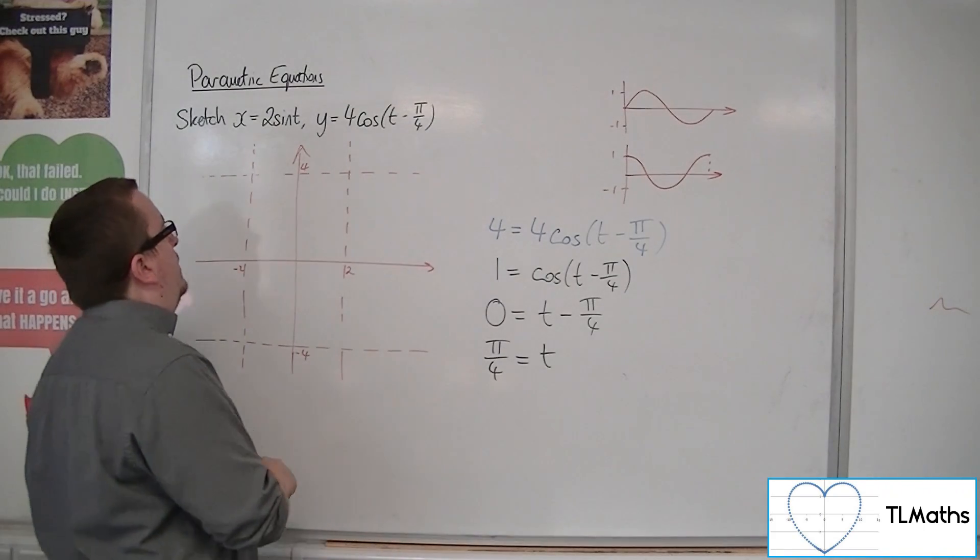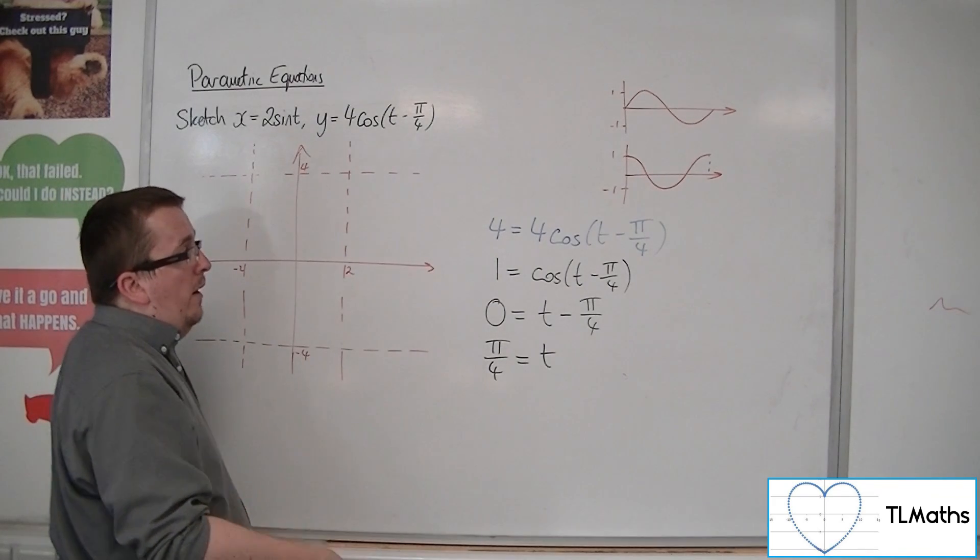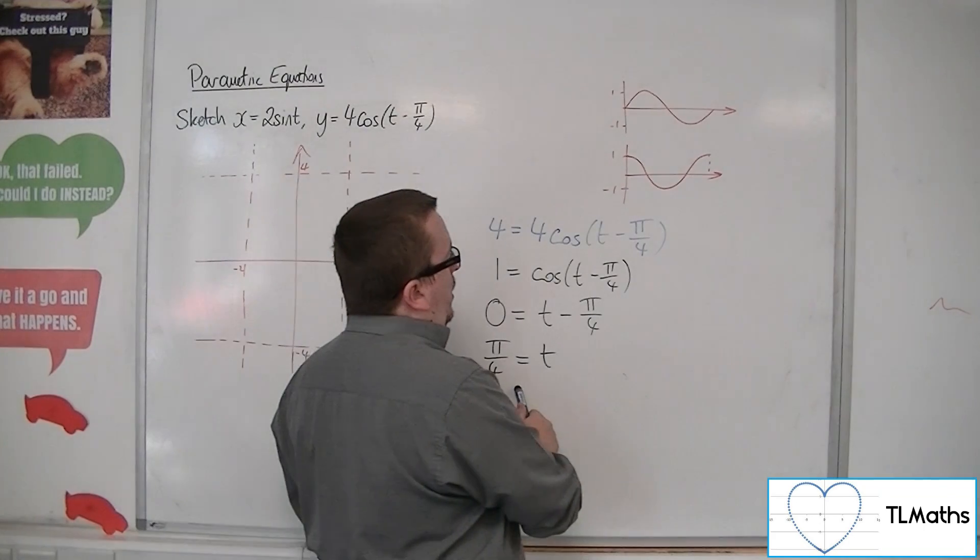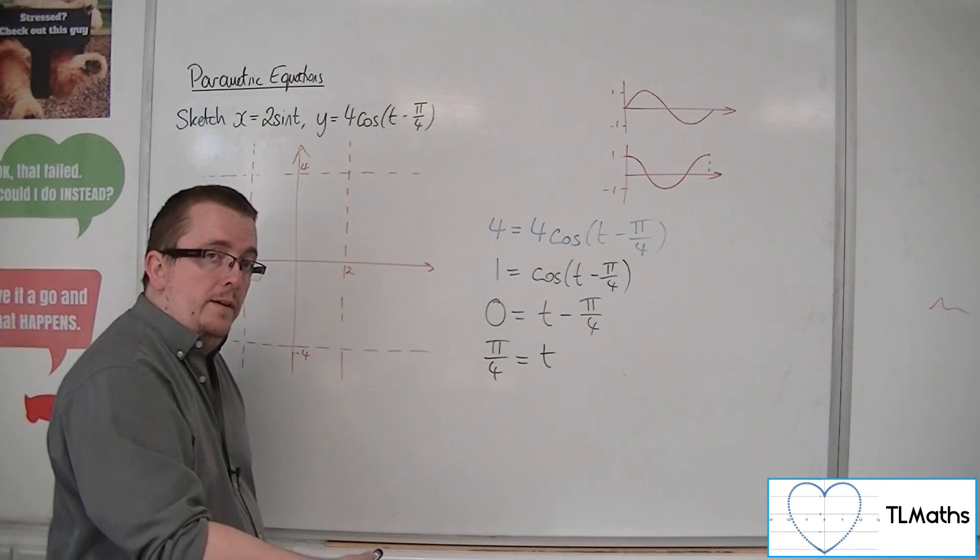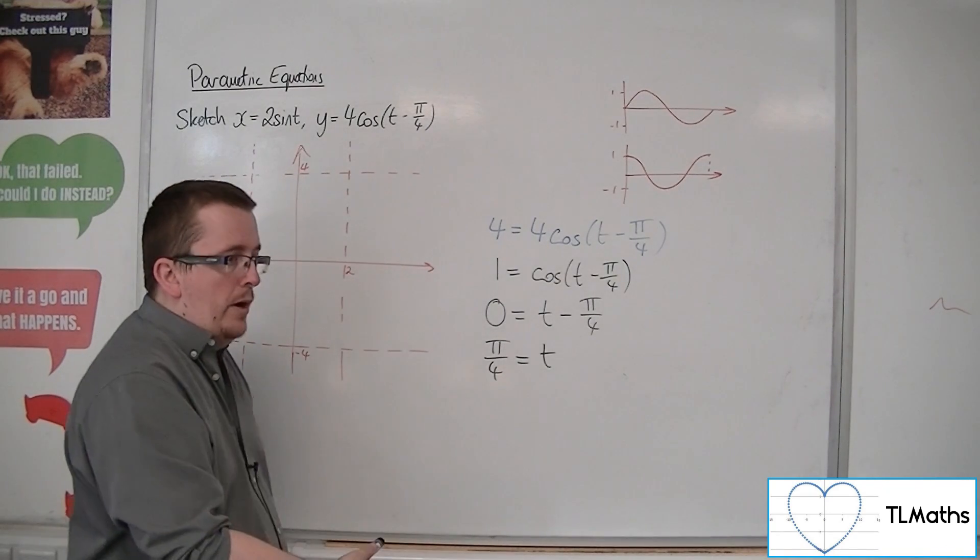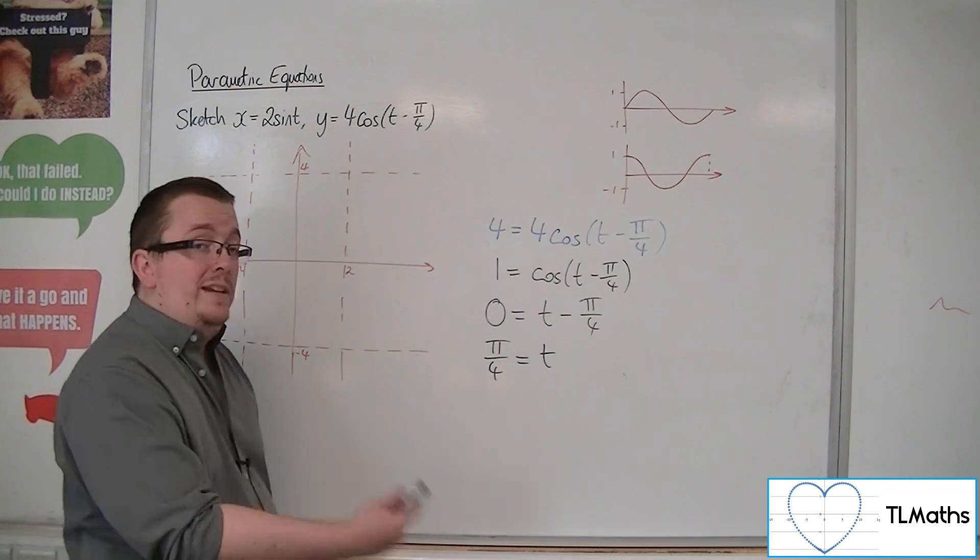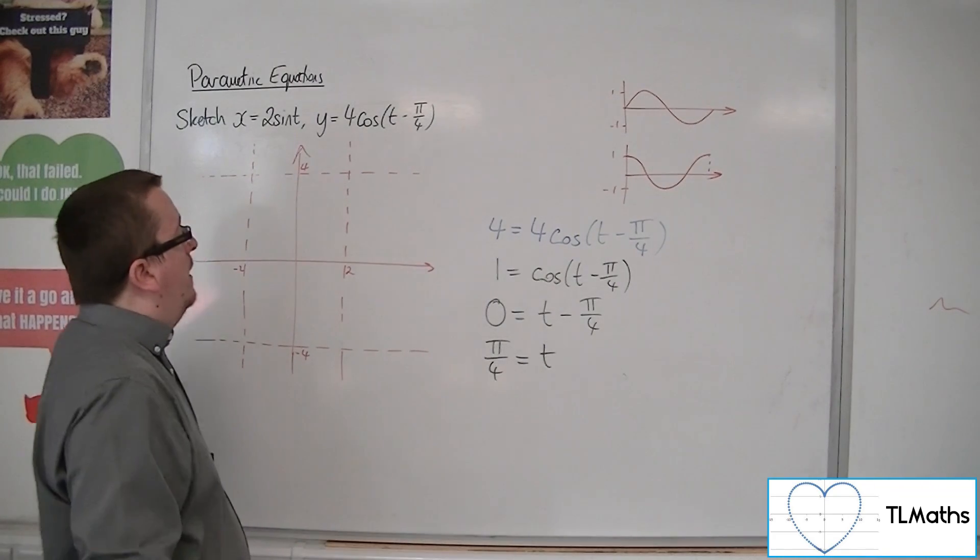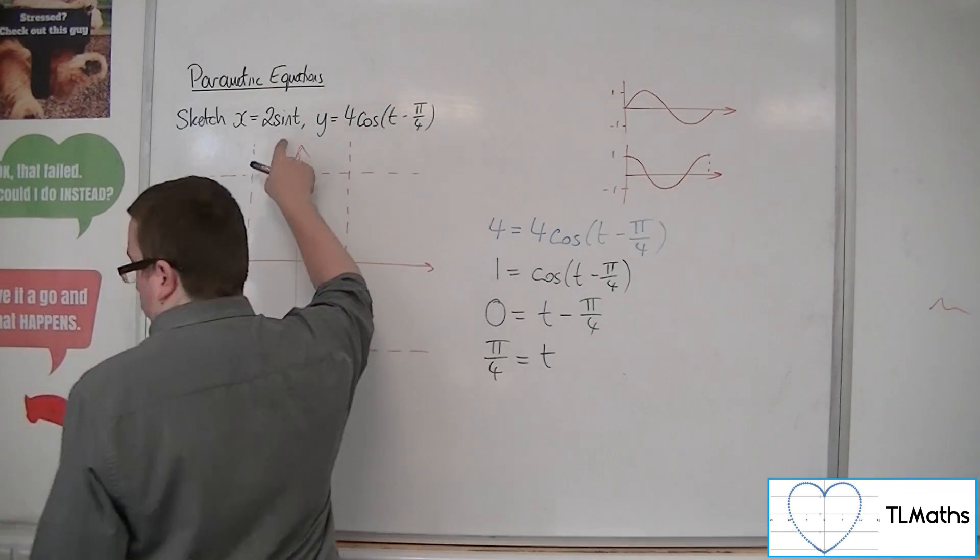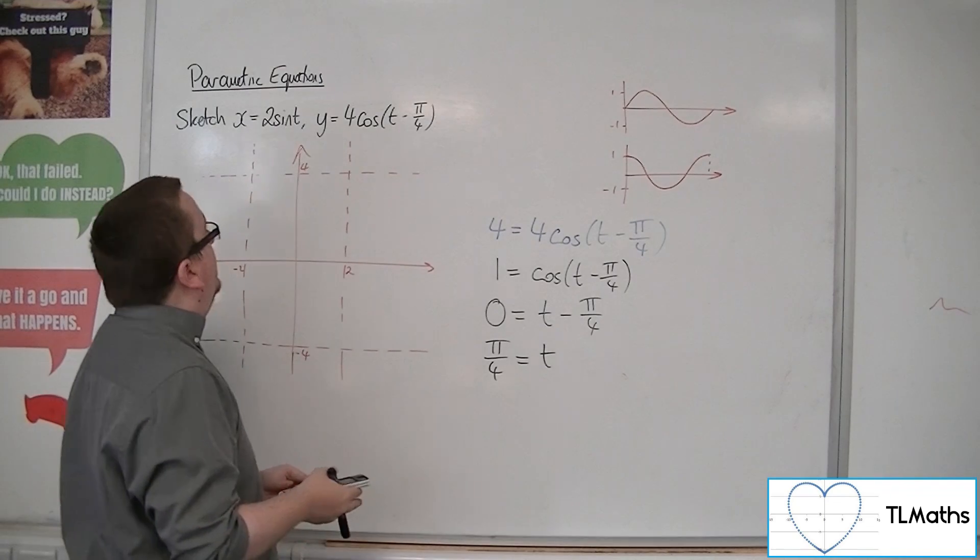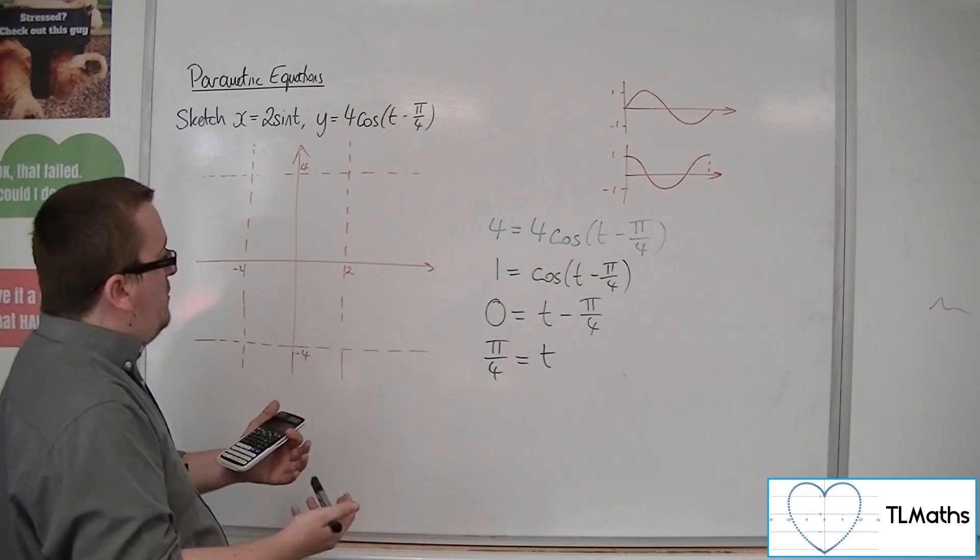And that gets you one value for where it's going to hit that 1. So if you're thinking about between 0 and 2 pi, t equals pi over 4, and t equals adding on 2 pi to that. So 9 pi over 4 will hit exactly the same point on the curve. So we only need to consider this one bit between 0 and 2 pi. So t equals pi over 4.